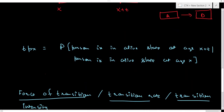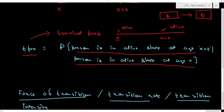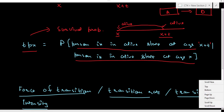The second notation is tpx, called the survival probability. This is the probability that a person aged x stays alive at age x+t — so he is alive at age x and also alive at age x+t. Formally, it is the probability that a person is in the alive state at age x+t, given that he was in the alive state at age x. This is referred to as tpx.